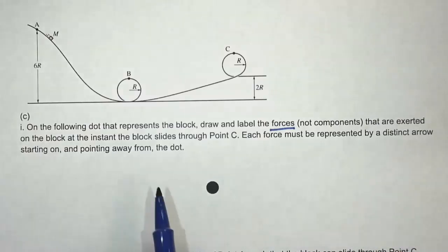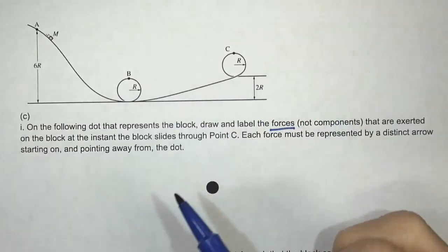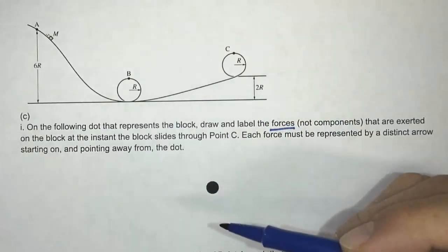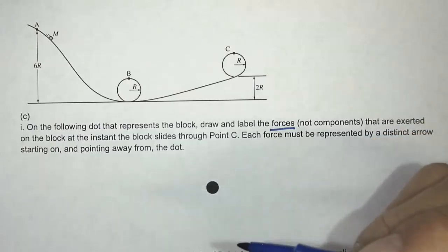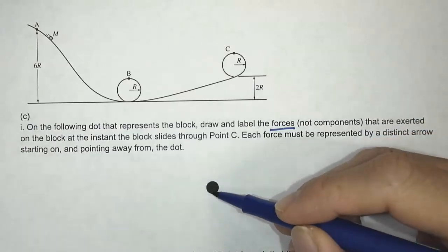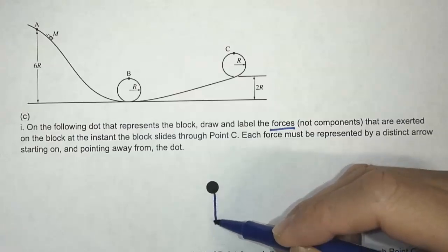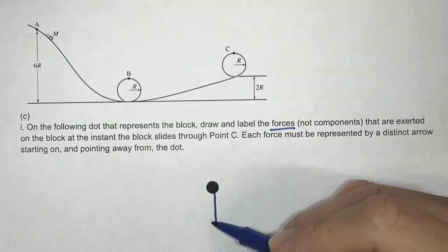Each force must be represented by a distinct arrow starting on and pointing away from the dot. So when we're doing force diagrams and when we draw the arrows to represent the forces, we typically will start the tail. This is just how we draw a force diagram. The tail is typically on the dot.